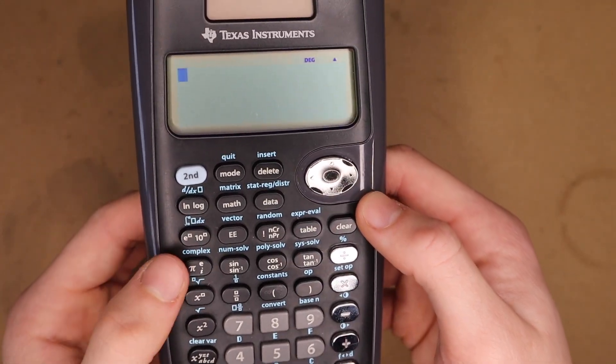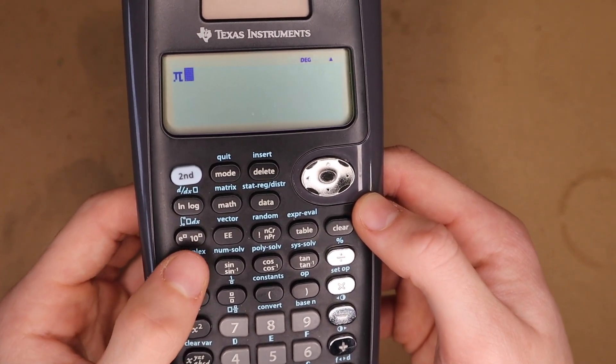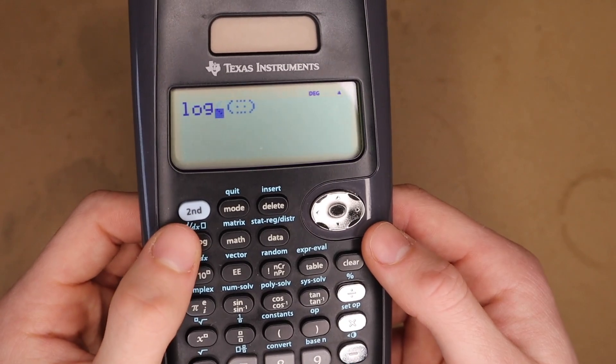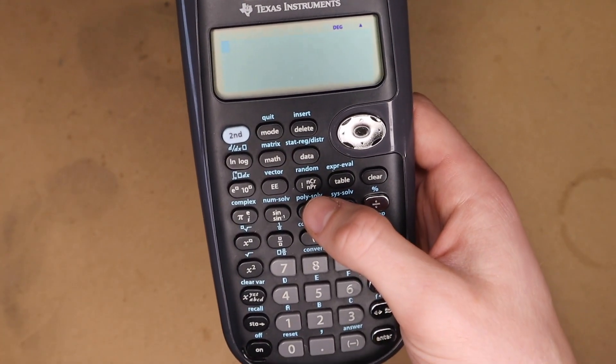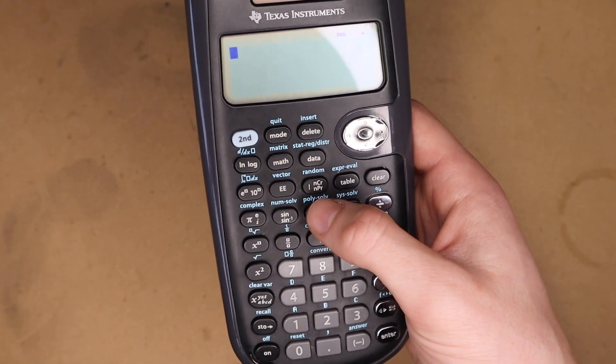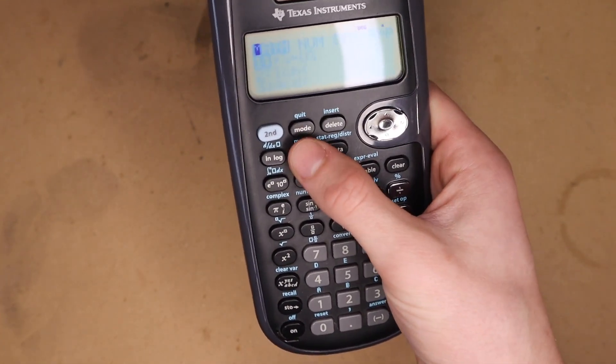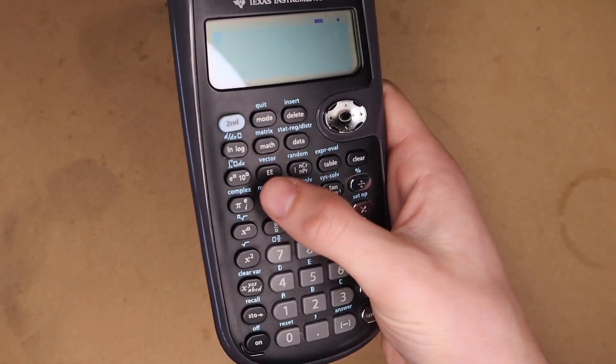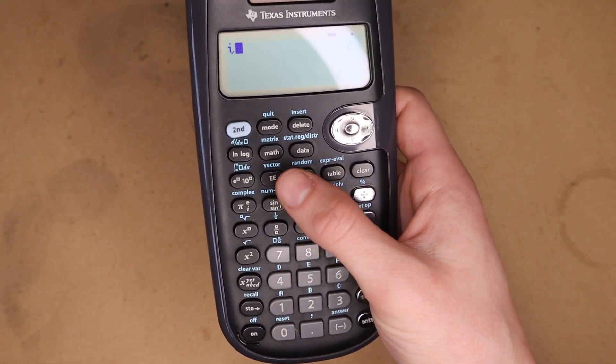So that's true for other buttons like this one right here. Cycles through pi, e, and i. And then natural log, log, and a log of any base. So I much prefer this method of entering expressions. I think it's much more efficient than having to go into a menu and then scrolling down to something and then hitting enter. You can just click the same button, and then you get the operation that you want.